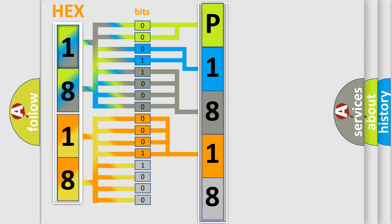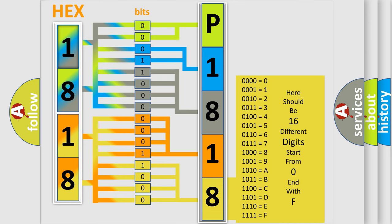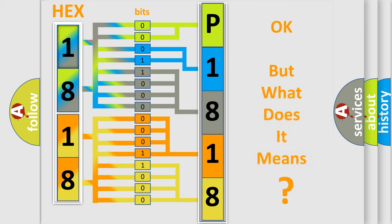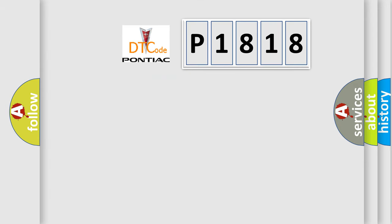A single byte conceals 256 possible combinations. We now know in what way the diagnostic tool translates the received information into a more comprehensible format. The number itself does not make sense to us if we cannot assign information about what it actually expresses. So, what does the diagnostic trouble code P1818 interpret specifically for Pontiac car manufacturers?